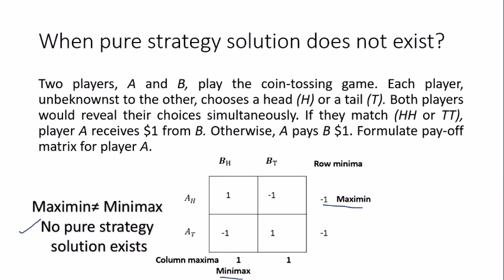When no pure strategy solution exists, it means you cannot declare anyone a winner at this point. Players A and B will not play with just one fixed strategy — sometimes they will use one strategy, sometimes another. There are two techniques to solve these situations: a graphical technique and an LPP (linear programming) formulation. We will focus on the graphical technique first.